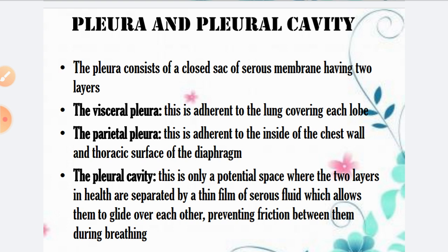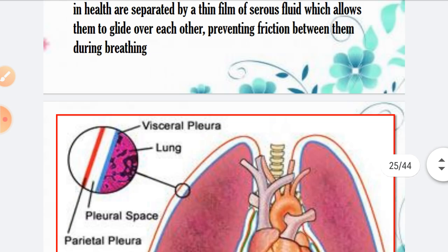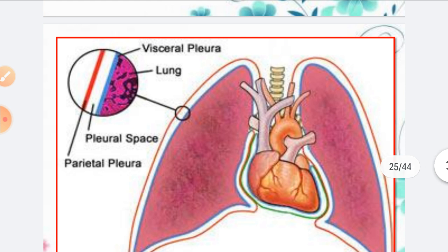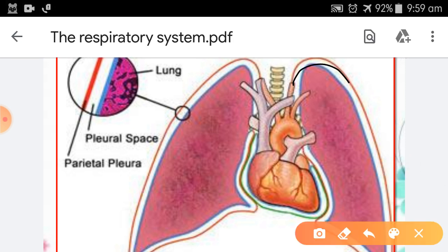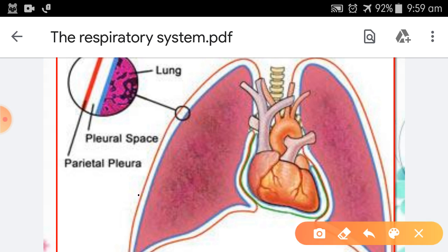The two layers are separated by a thin film of serous fluid. This is why, during breathing — when the chest expands and recoils — the layers can glide smoothly. This is the pleural cavity. The outer layer is the parietal pleura and the inner layer is the visceral pleura.